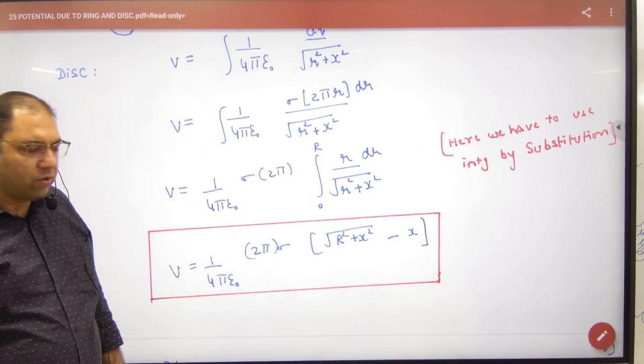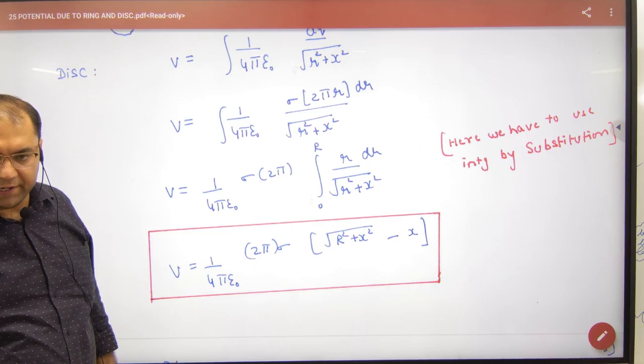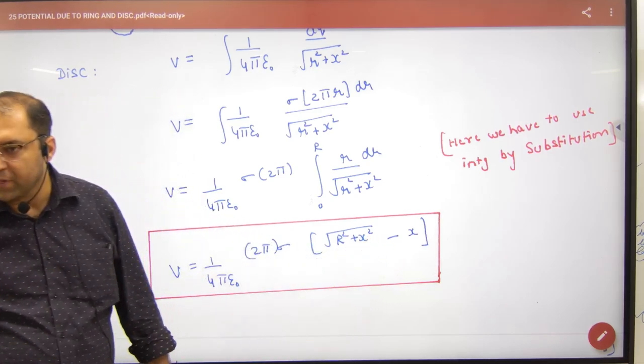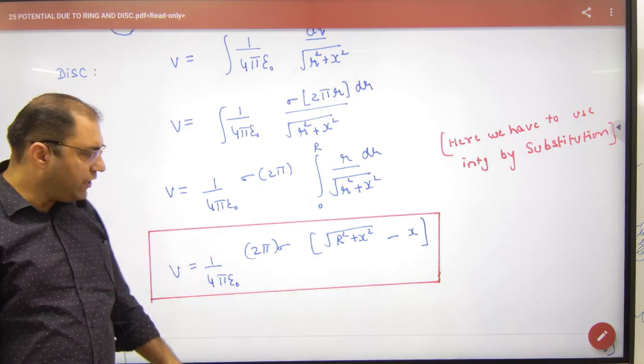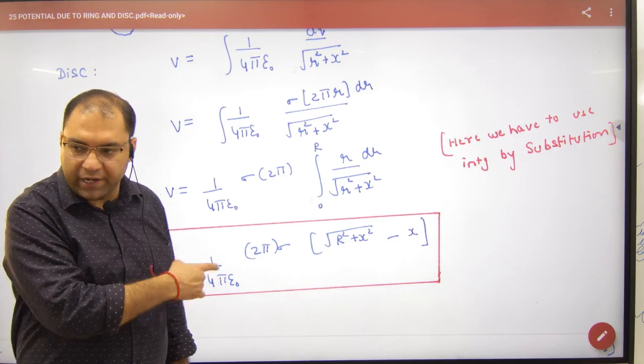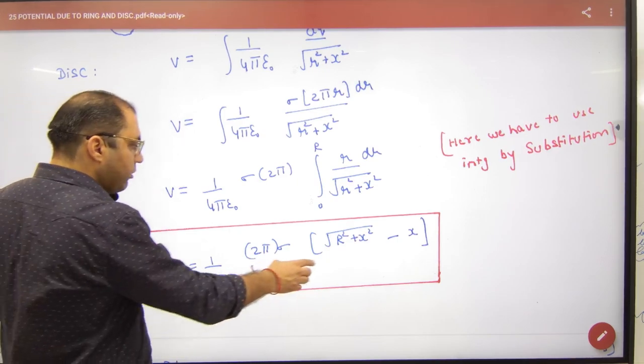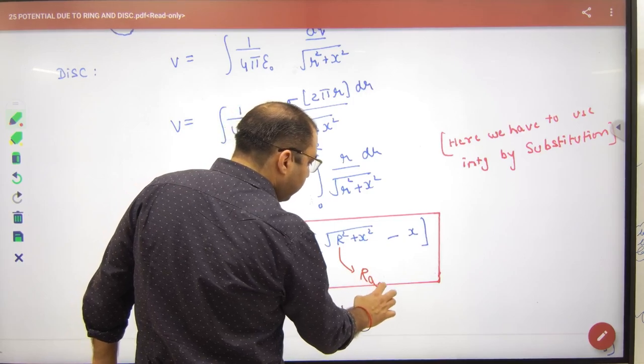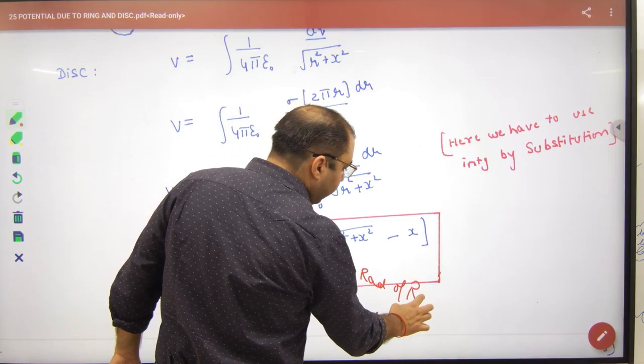The math requires some work. This formula will result - note this formula for potential on the axis, where capital R is the radius of the disc. Write this in your formula register.